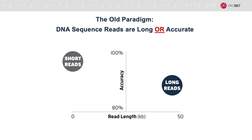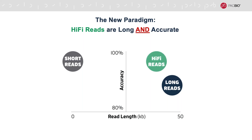What are HiFi reads? HiFi reads represent a new paradigm in sequencing. The old paradigm presented a choice between read length and accuracy: either the high base accuracy of short read sequencing technologies producing reads a couple of hundred base pairs in length, or long read sequencing producing tens to hundreds of thousands of kilobases in length but with lower base accuracy. With HiFi reads, we present the best of both worlds — reads up to 25 kb in length with Q20 or 99% accuracy and above.